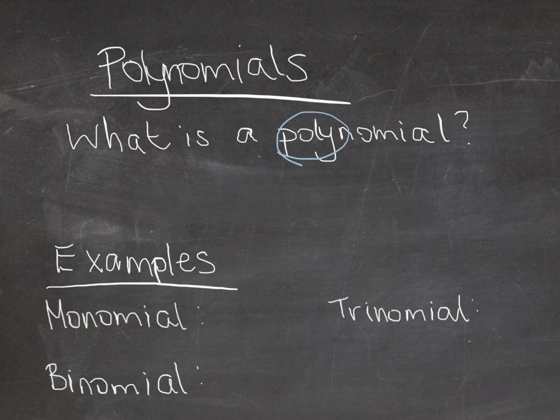We have different names for certain polynomials with a certain number of terms. For example, a monomial - that prefix means one - so a monomial has only one term. For example, it could be something like x is a monomial.